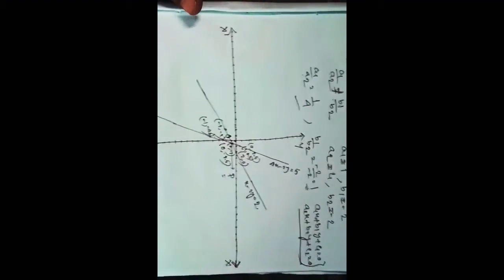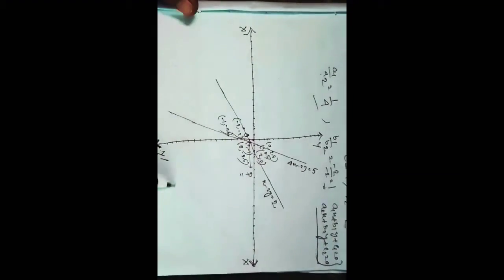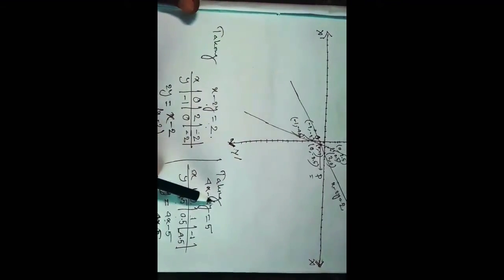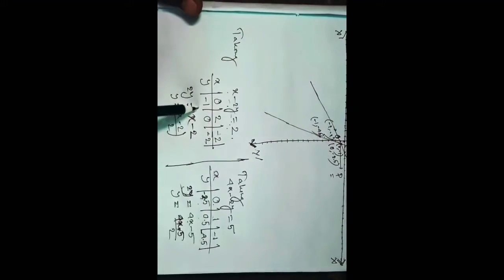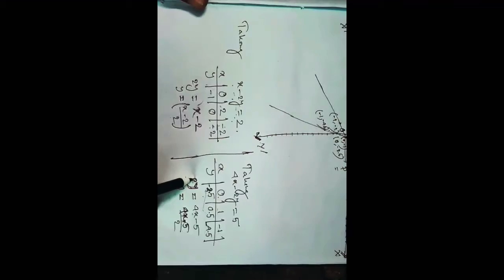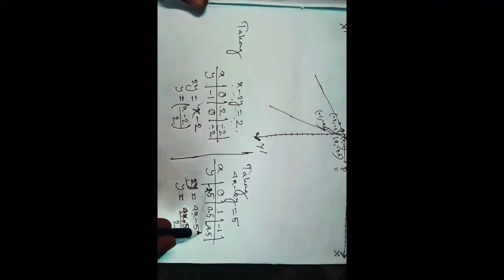Now we have to show it by graphical method. Since I have no proper graph paper, I am just showing a rough solution so that you will understand. Here for x minus 2y equal to 2, we get x by y values: 0 and minus 1, 2 and 0, minus 2 and minus 2. And for 4x minus 2y equal to 5, rearranging gives y equal to 4x minus 5 by 2, giving x by y values: 0 and minus 2.5, 1 and 0.5, and minus 1 and minus 4.5.